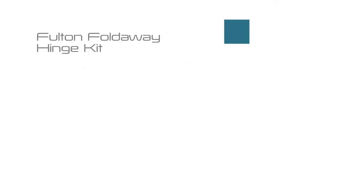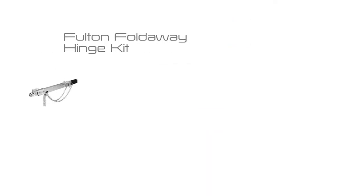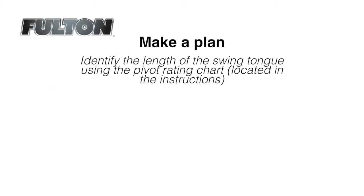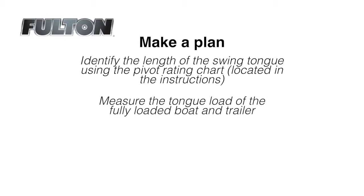First step in installing your Fulton fold-away hinge kit is to make a plan. Identify the length of the swing tongue using the pivot rating chart located in the instructions. Measure the tongue load of a fully loaded boat and trailer. Check the trailer capacity.